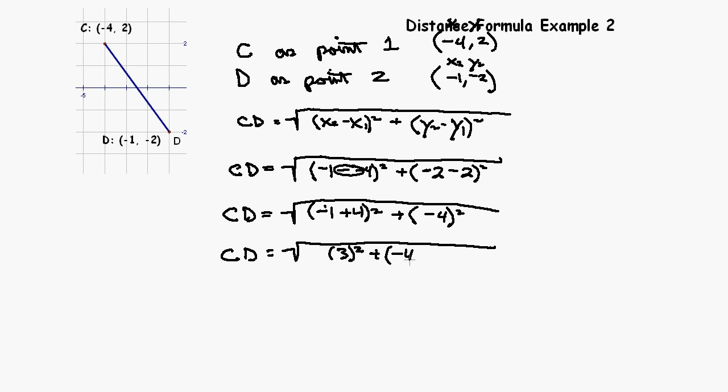If we square both of those, C to D distance is the square root. 3 times 3 is 9. Negative 4 times negative 4 is a positive 16. If we add 9 and 16 together, we get 25, and the square root of 25 is 5. So, the distance from C to D is 5 units.